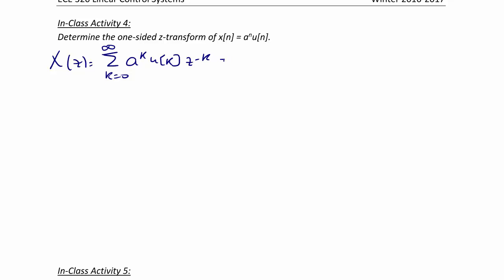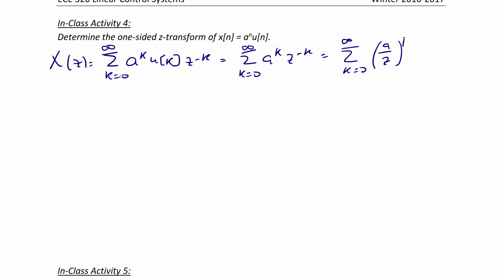We can replace U of K with one for K equals zero to infinity, so it becomes the summation from K equals zero to infinity of A to the K times Z to the negative K, which can also be written as the summation from K equals zero to infinity of A over Z raised to the K.